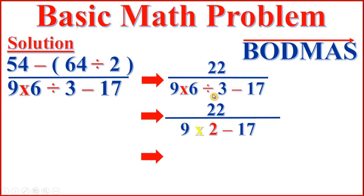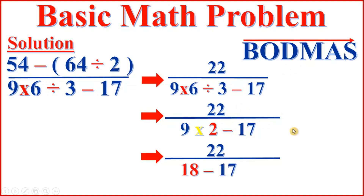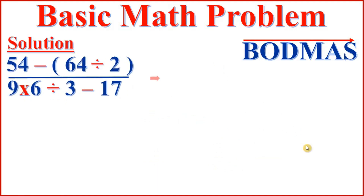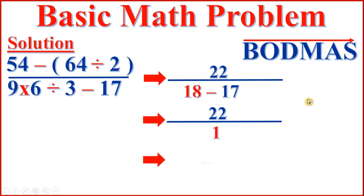6 divided by 3 equals 2, giving us 9 times 2 minus 17. After division comes multiplication: 9 times 2 equals 18. Then 18 minus 17 equals 1. So we have 22 divided by 1.